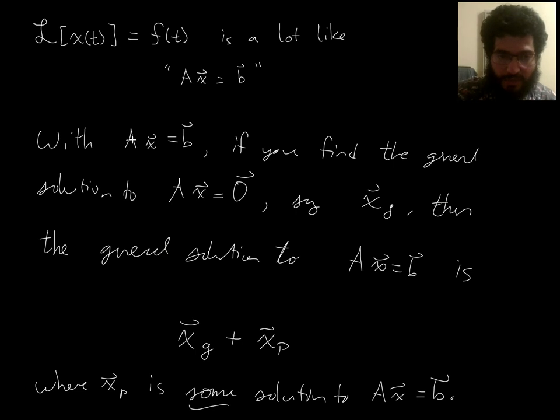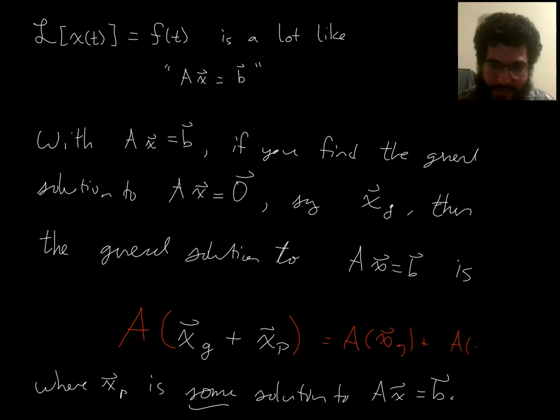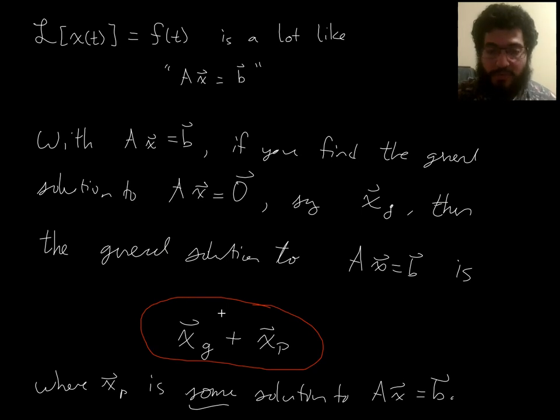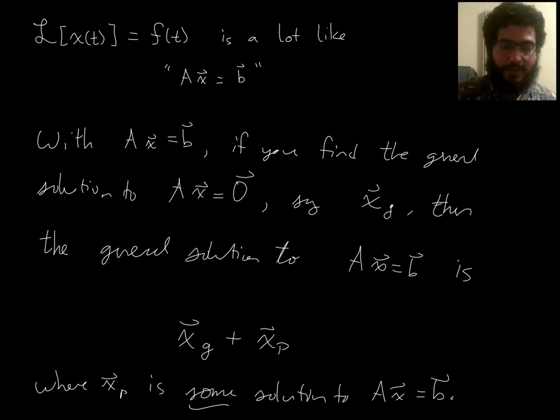Basically, it comes from the linearity of A. If I now apply A to this thing, then I get A applied to the first part plus A applied to the second part. And this one is zero because I'm saying that this solves the homogeneous linear system, so I just get A applied to the second part. And if the second part is a solution to Ax equals B, then that should give me B. So that's why it works. That at least shows you why this is always going to yield a solution to the original non-homogeneous linear system.